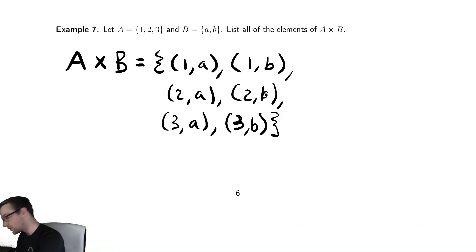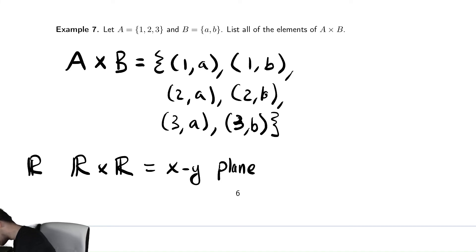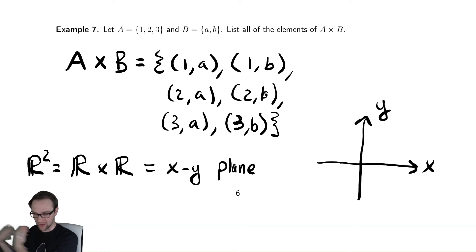One reason that this is useful is, for example, if you multiply the real numbers by each other, this is what you might call just the XY plane. In fact, we call this R squared. It's everything in the XY plane. That is one example where this shows up.